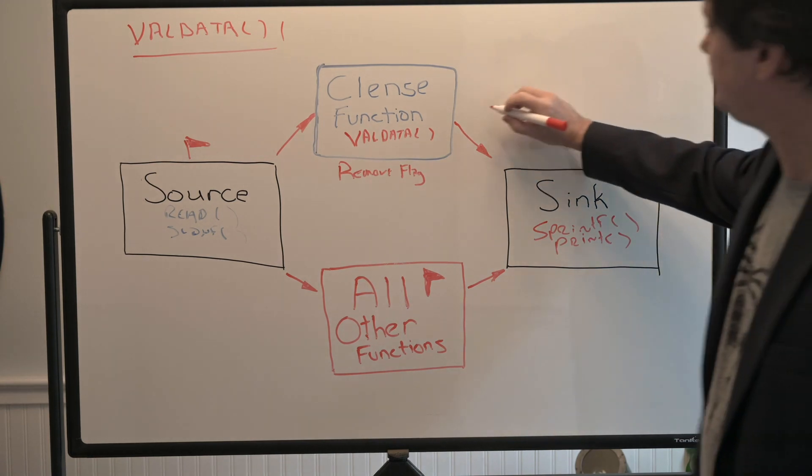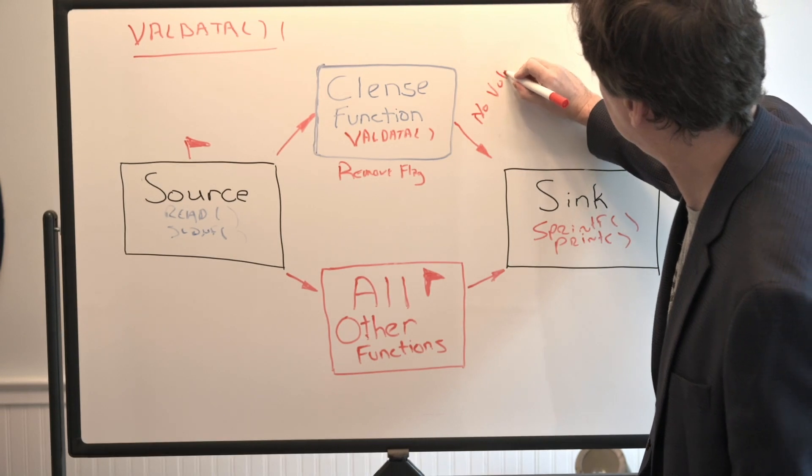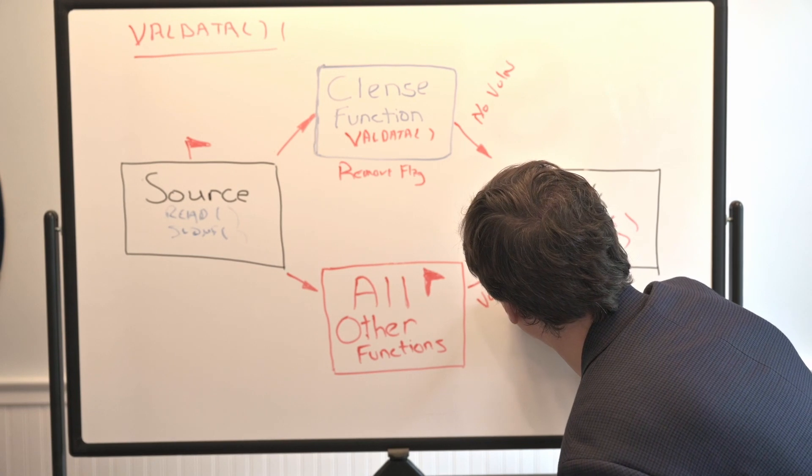The data flow analyzer now recognizes the cleanse function as a valid cleanse function that will validate the data and remove the flag. And if the source passes through this, no vulnerability. But if it does anything else, vulnerability.